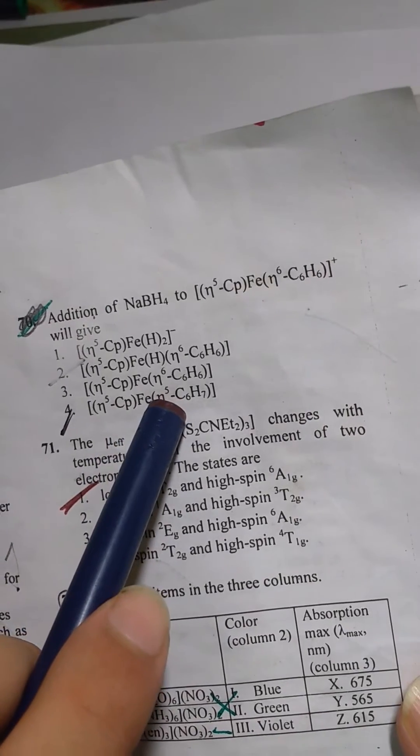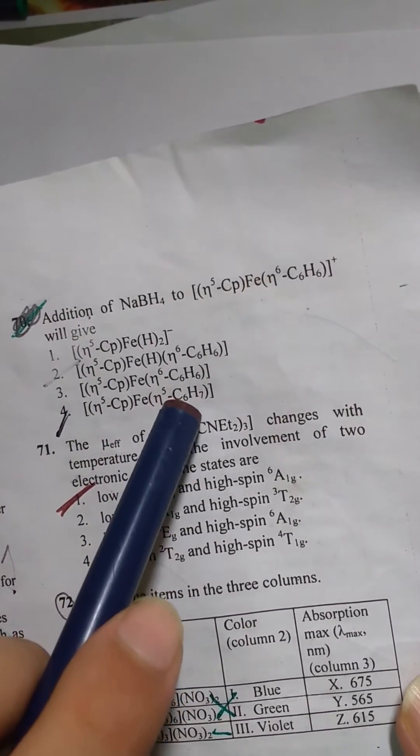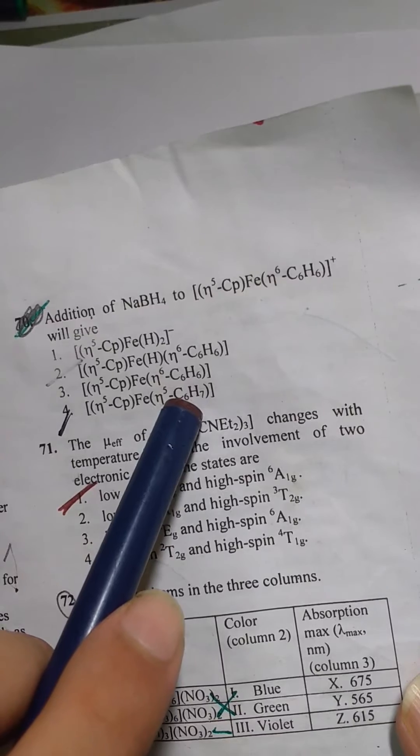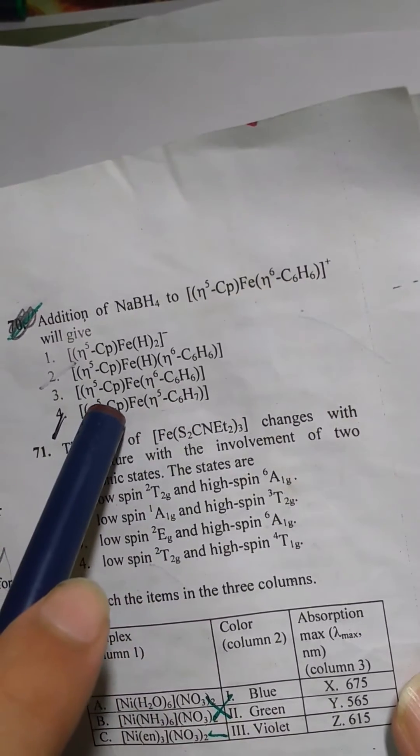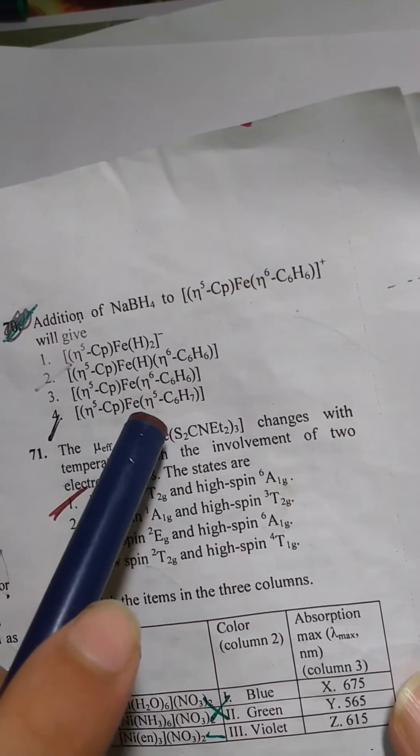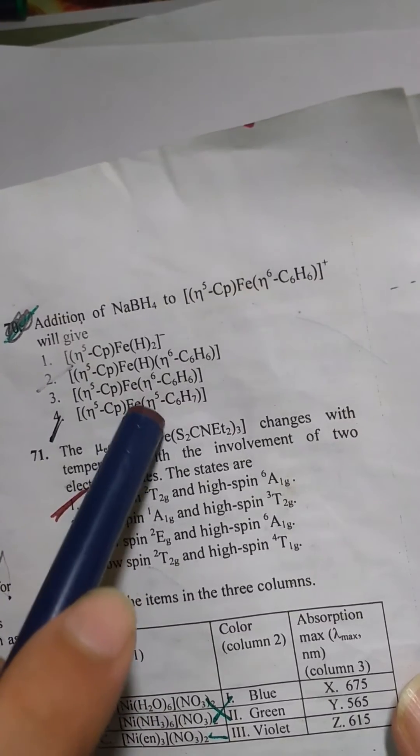How? Because now it's eta 5 so 5 electrons contribution from this ligand, 5 electrons from cyclopentadiene so 10 plus 8 electrons in iron. So this is an 18 electron complex.